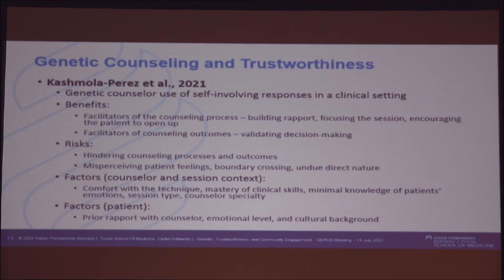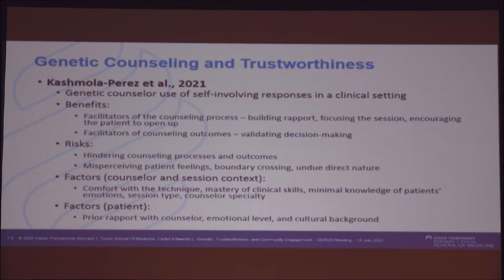The American Association of Medical Colleges just put out principles of trustworthiness, recognizing that we cannot ask communities to trust us if we don't measure whether we are trustworthy. The only paper I found on genetic counseling and trustworthiness was by Kashmola and Perez. Key counselor factors included comfort with the technique, mastery of clinical skills, minimal knowledge of patients' emotions, session type, and counselor specialty. Patient-specific factors were prior rapport with the counselor, emotionality, and cultural background — things we don't do a very good job of measuring.